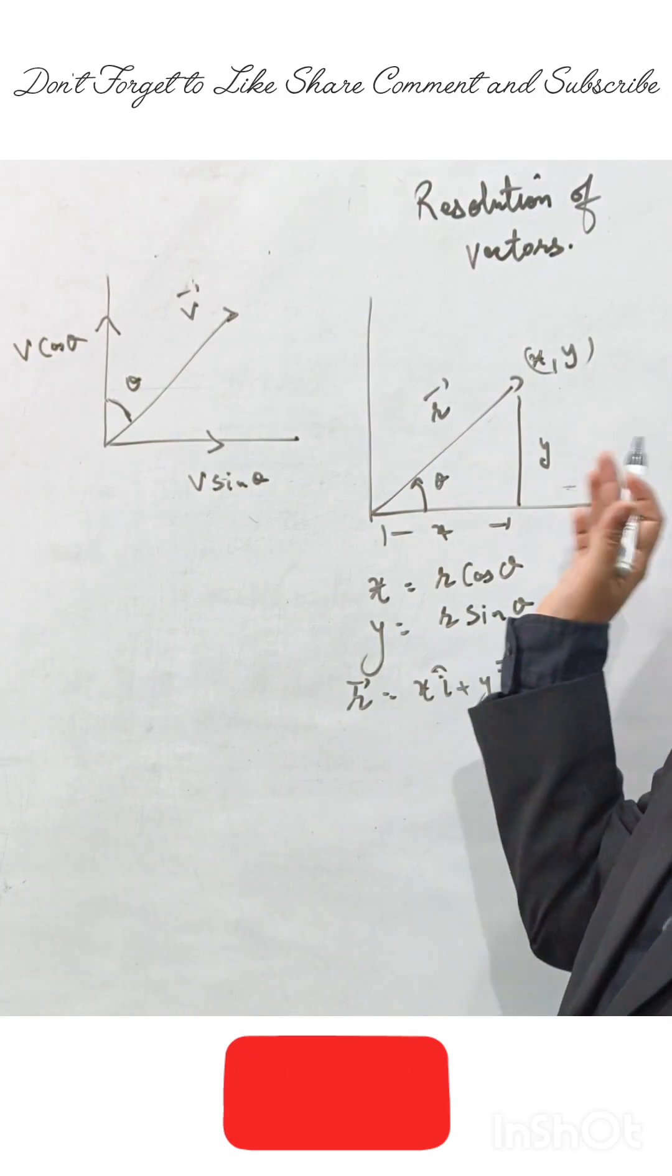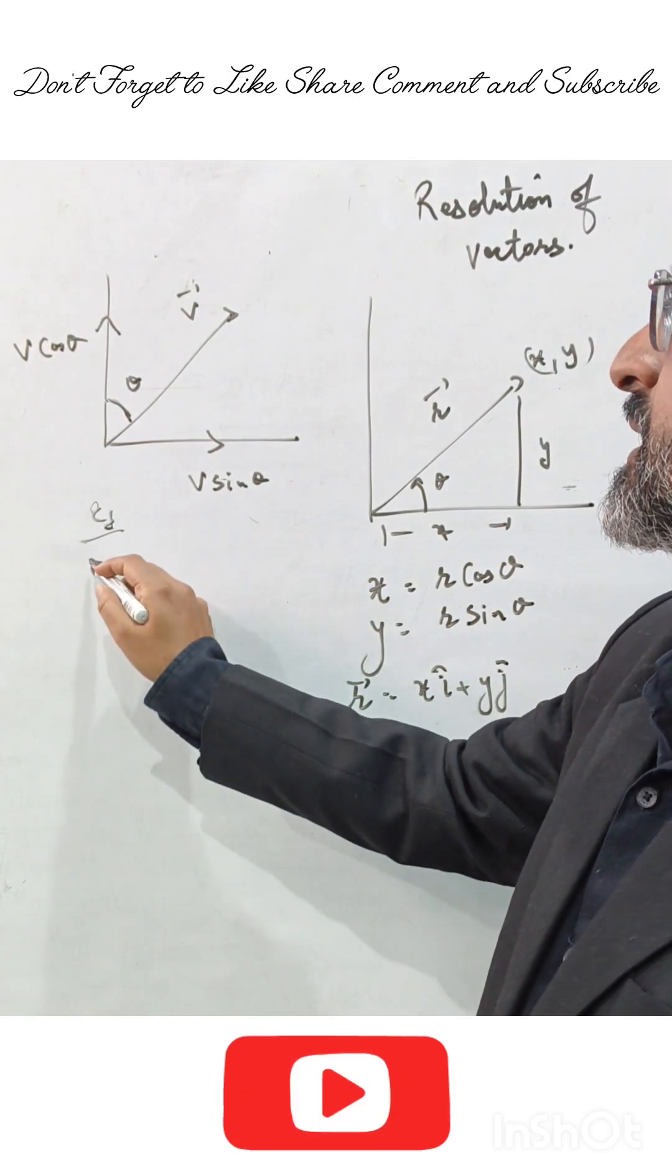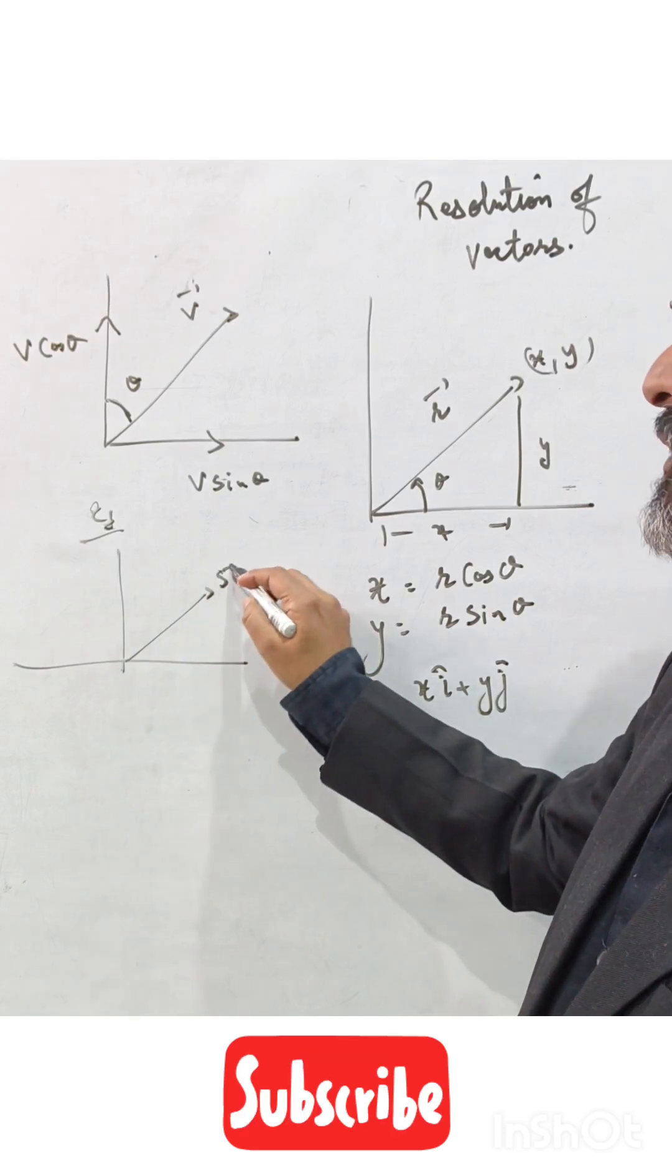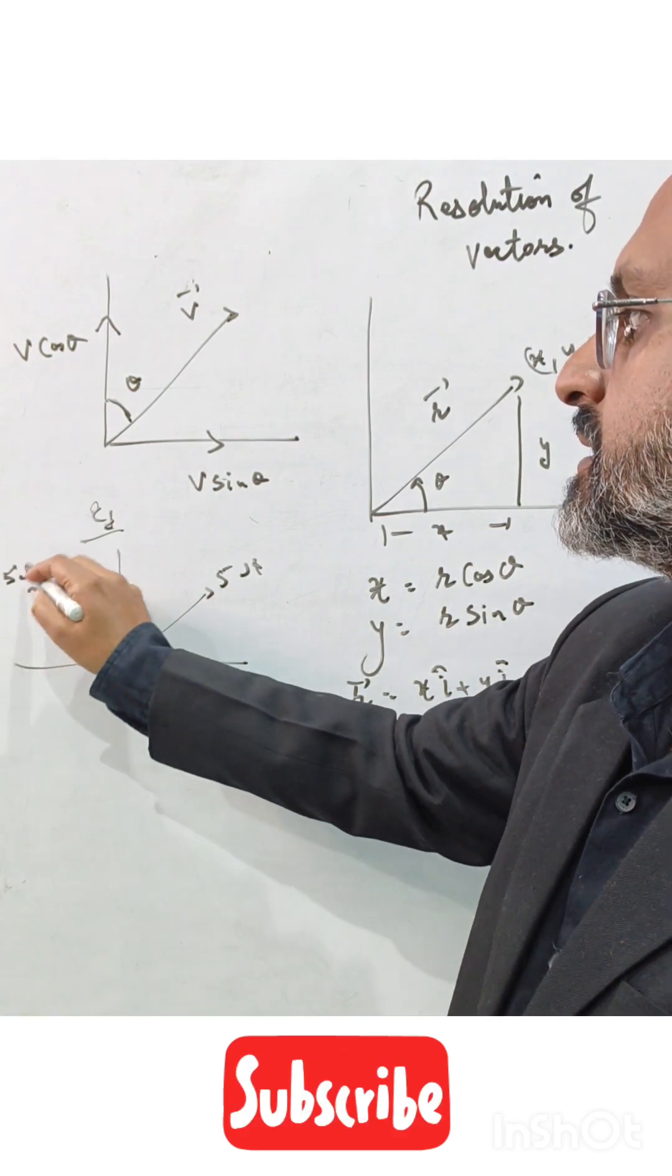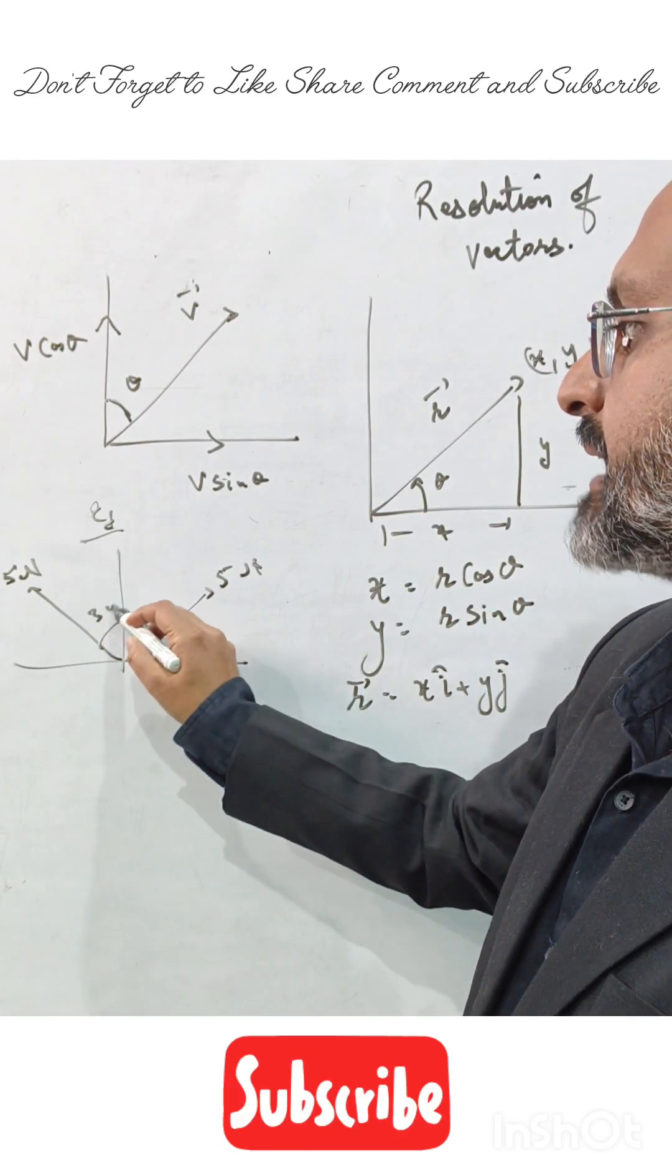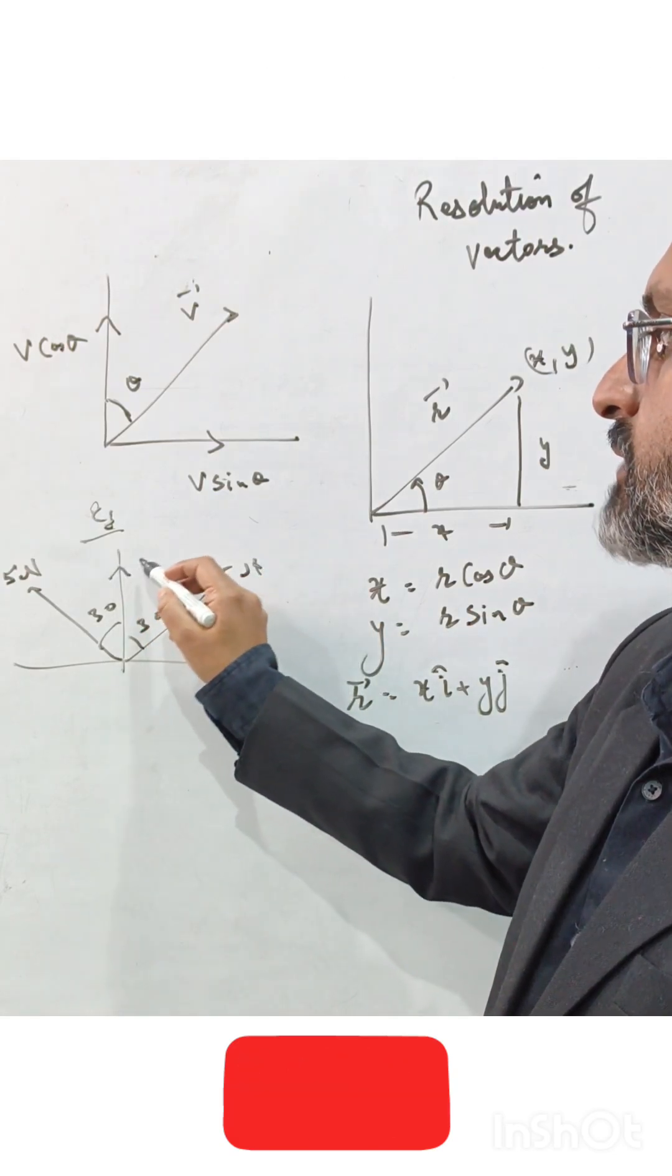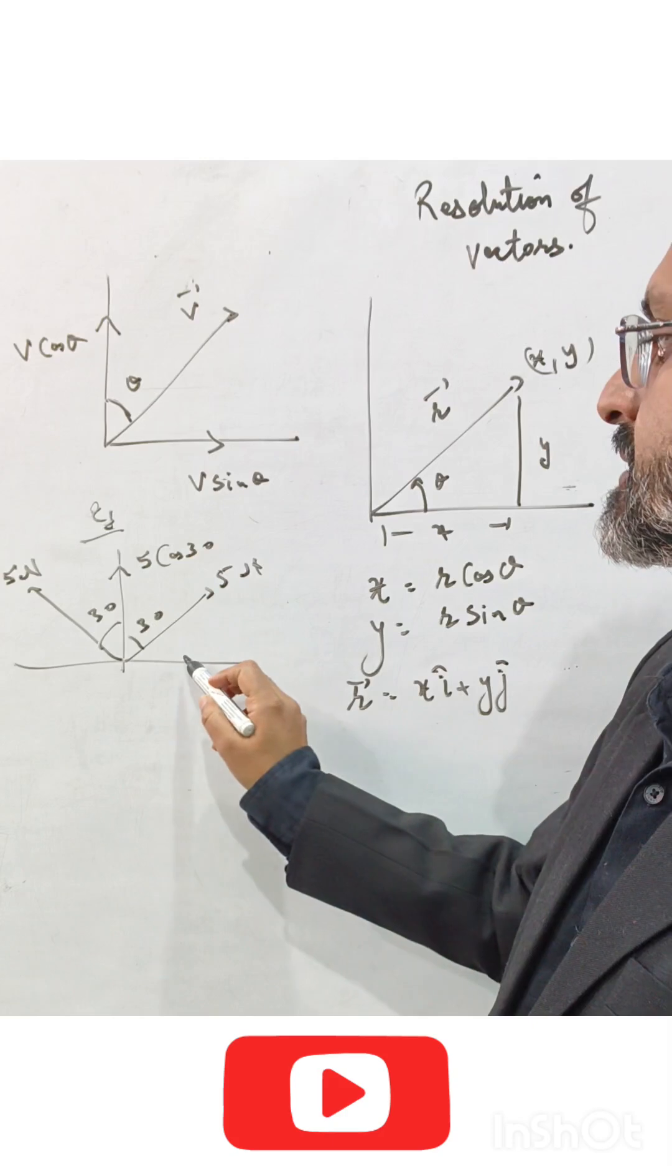Let us consider one example. Suppose there is a force of five newtons here, and another force of five newtons is applied in this quadrant, both inclined at an angle of 30 degrees with the y-axis. So resolve the component of five newtons. This will be five cos 30 and this component will be five sine 30.